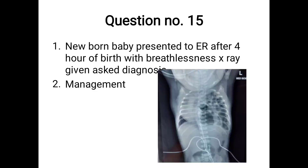Question 15: an X-ray of a newborn presenting four hours after birth with breathlessness. Diagnosis: congenital diaphragmatic hernia (CDH) on the left side. Management: ABCD approach, place a nasogastric tube to decompress, and immediately refer to surgery. Remember: do not use positive pressure ventilation. If needed, intubate the patient, but do not use positive pressure ventilation.